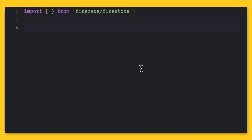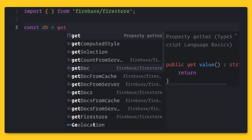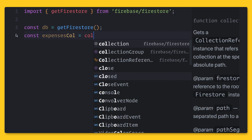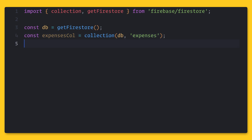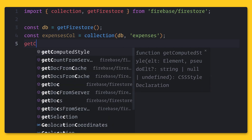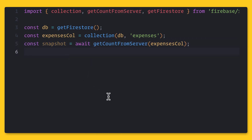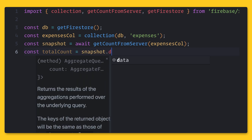Count works just like any other query in Firestore. You start out by getting an instance to Firestore, and then you create a reference to a collection. From there, you can use one of the brand new count functions in the SDK, and that's going to be named differently per platform. Here on the web, it's called getCountFromServer. All you have to do is await that function, and you will get back the count property within the snapshot.